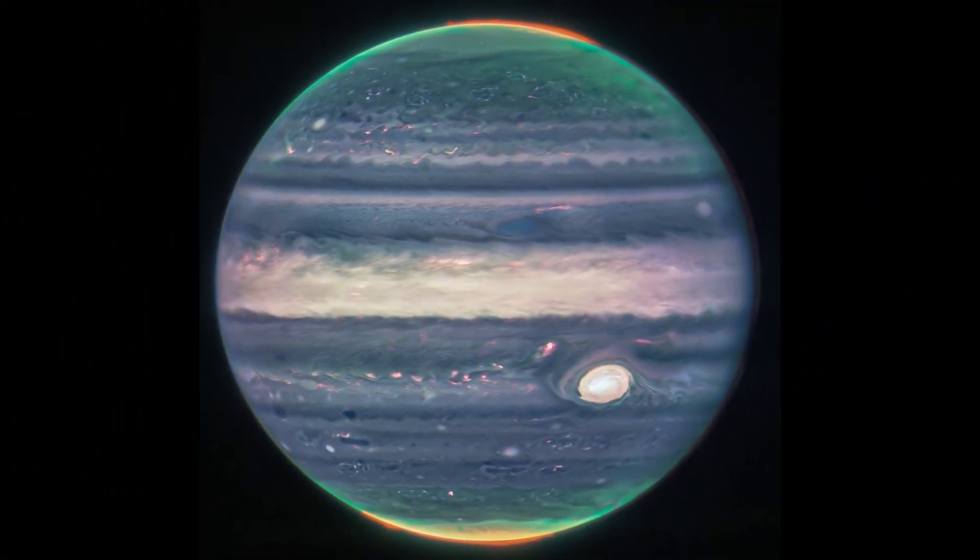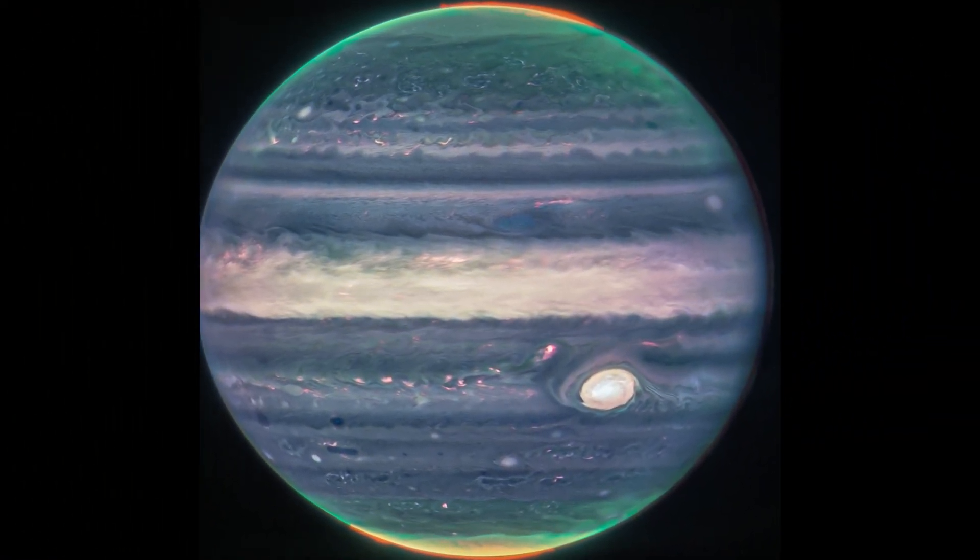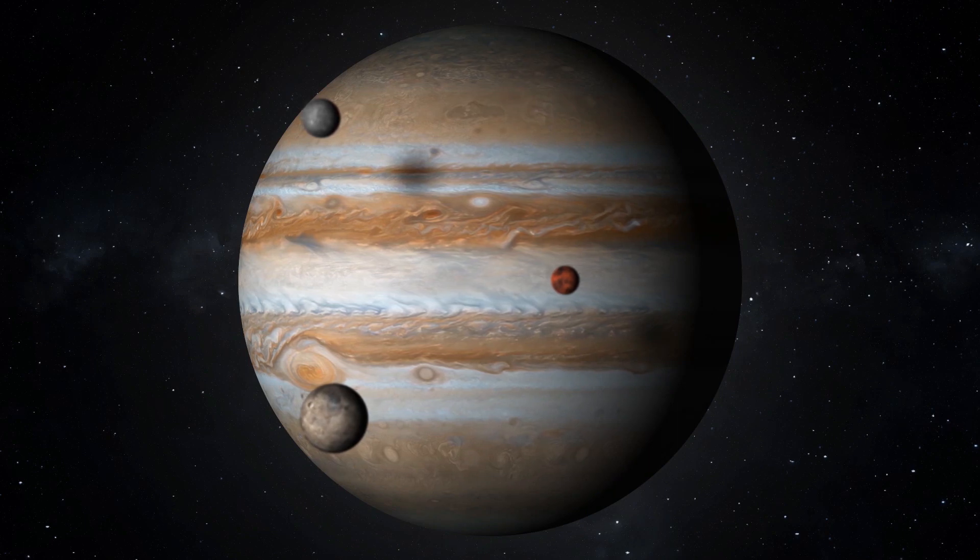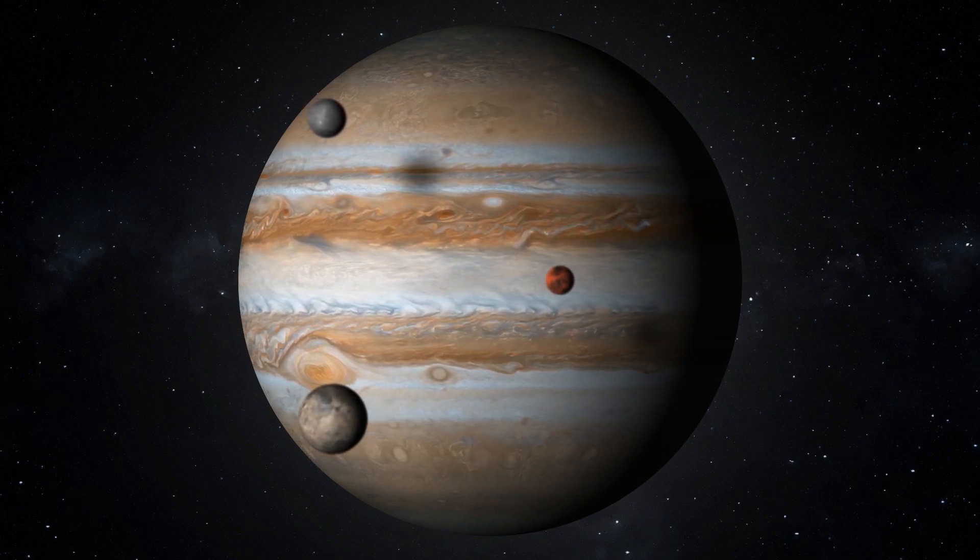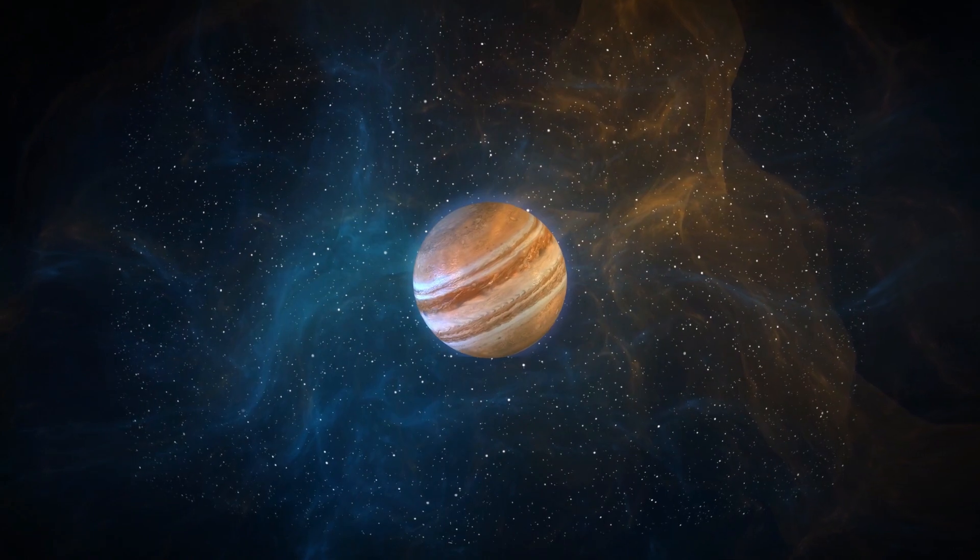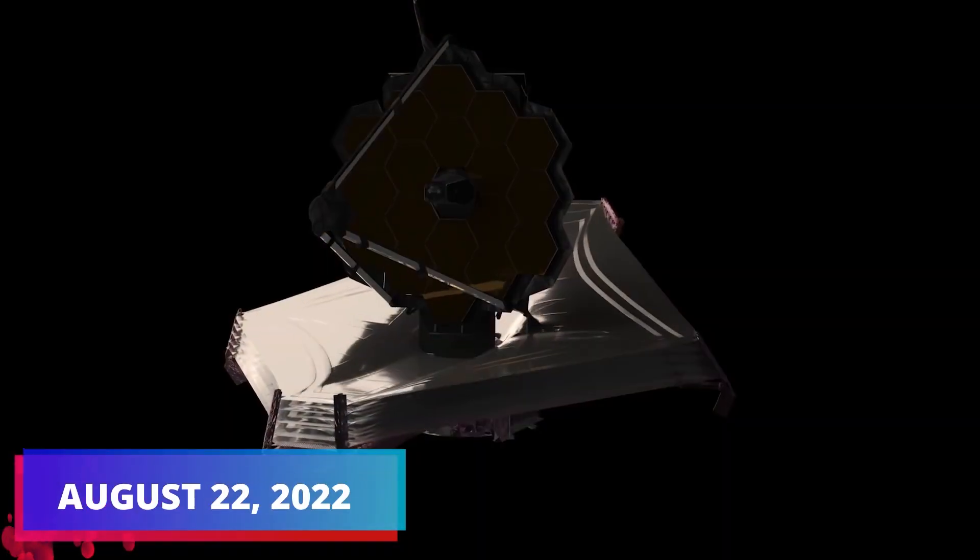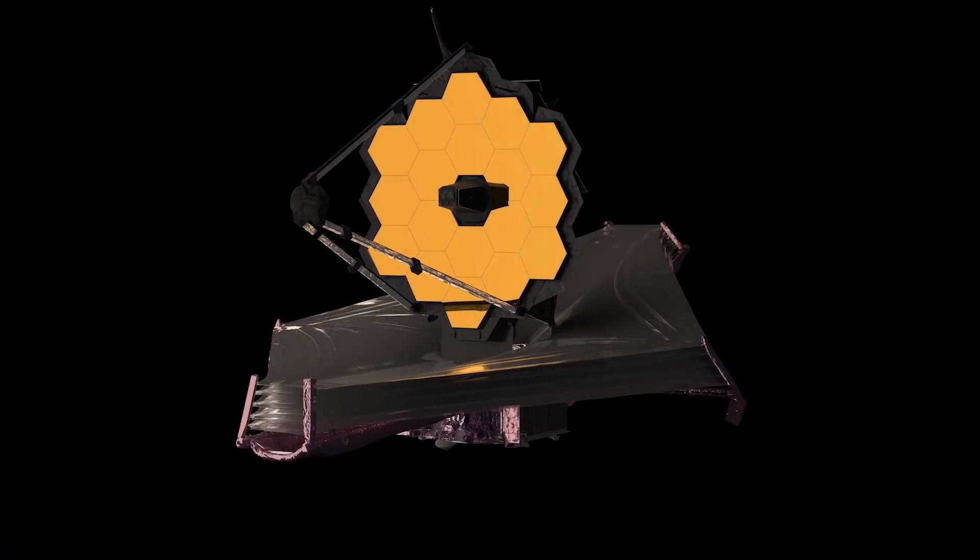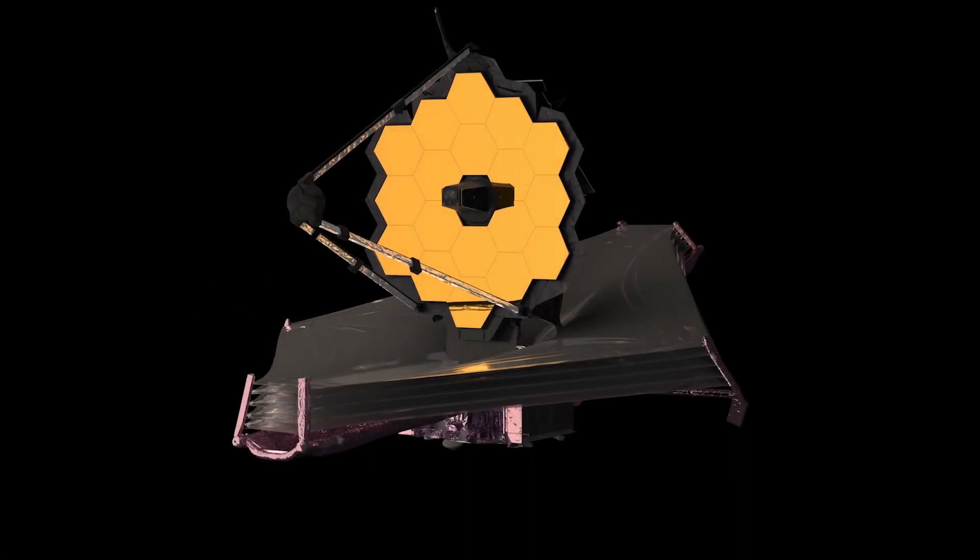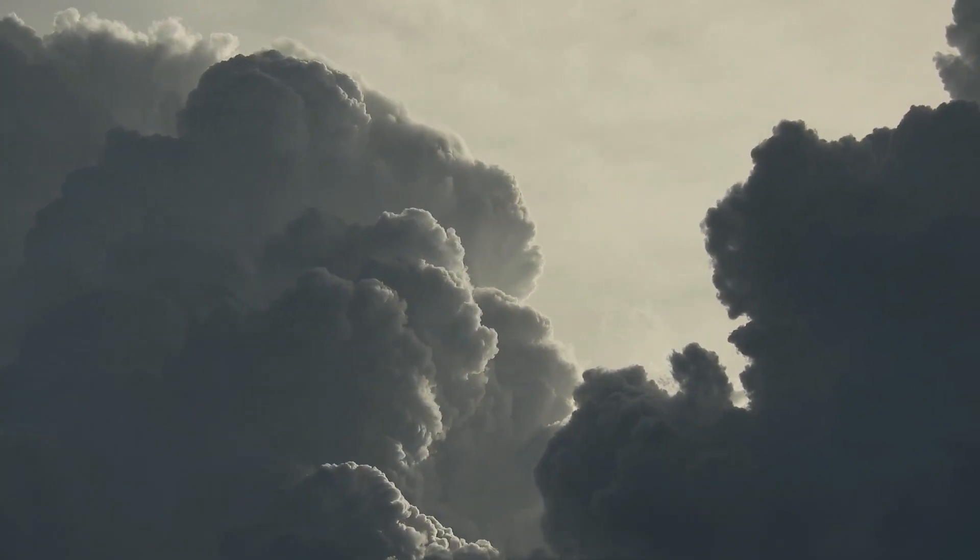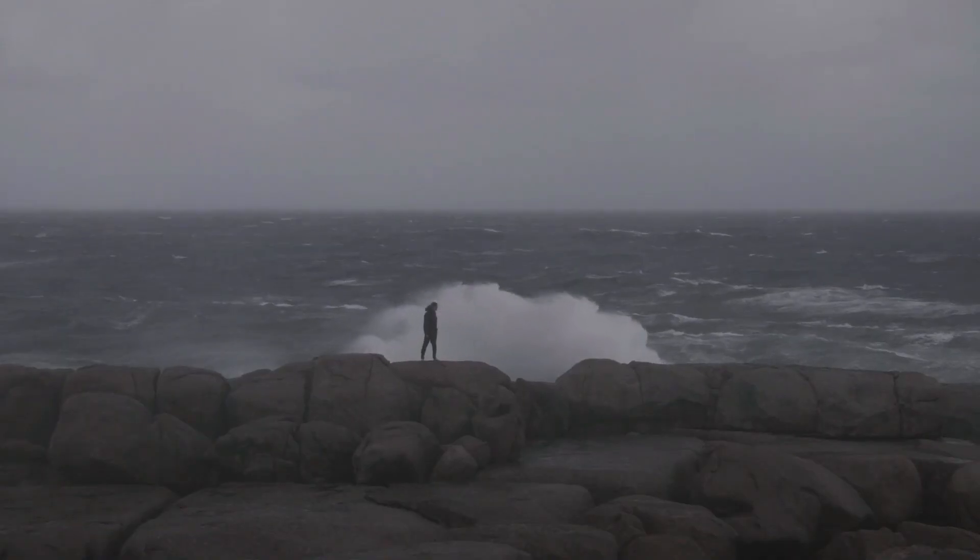Jupiter is certainly not a new discovery to scientists. It's well known as the biggest planet in our solar system, and astronomers have been imaging it as far back as the 1800s. But on August 22, 2022, the James Webb telescope showed us another perspective of this giant world of extremes with its enormous storms, super-fast winds, and intensely cold temperatures.